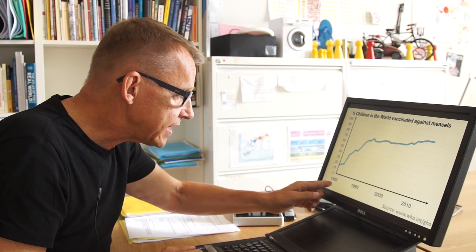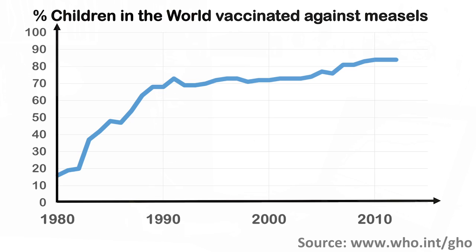Measles is a deadly disease for children. When I worked as a doctor, I was a young doctor in 1980 in East Africa, there were so many children dying of measles we couldn't save them.